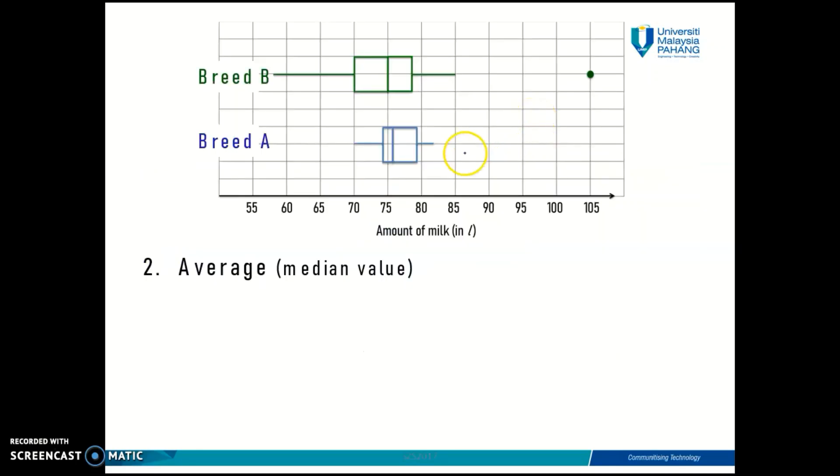Next, if you have more than two sets of data plotted on the same axis, you can compare these data sets by looking at the average value. In a box plot, you cannot see the mean or mode values, but you can see the median.